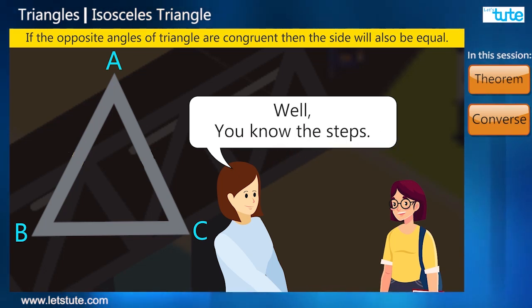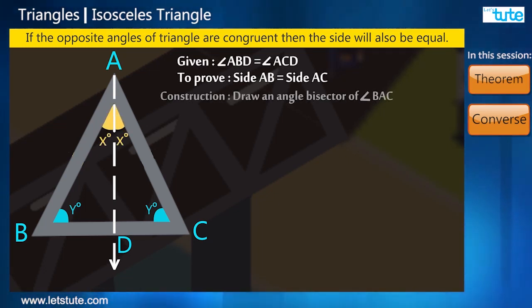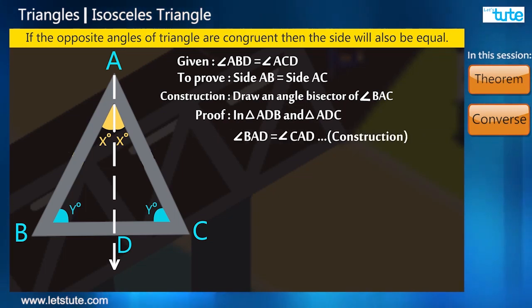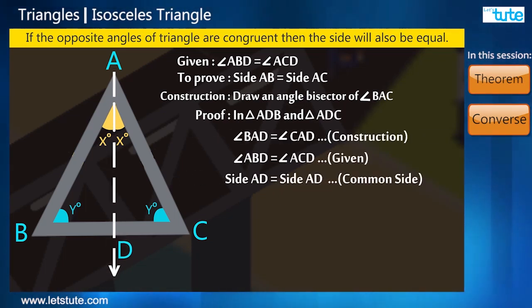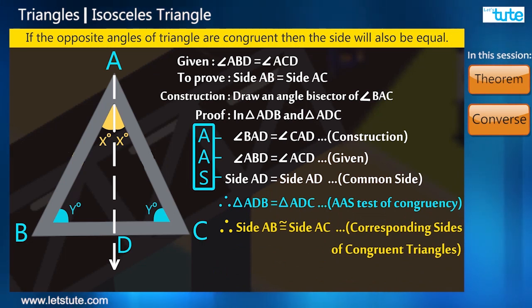Well, you know the steps. So I said that we will take a triangle and construct an angle bisector. Now because of angle bisector we will get one angle equal and a common side and the triangles will be congruent and by using the corresponding sides property we can prove that the sides will also be equal. And well, we just proved if the two angles of a triangle are equal then the sides opposite to them will also be equal.